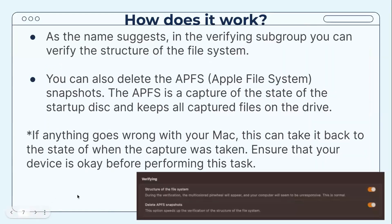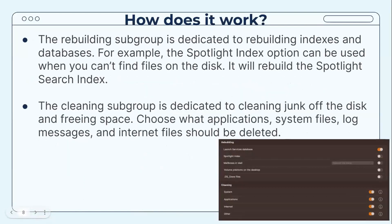In the Verifying subgroup, you can verify the structure of the file system. You can also delete APFS (Apple File System) snapshots — the APFS is a capture of the state of the startup disk, keeping all captured files on the drive. If anything goes wrong with your Mac, it can restore it to the state when the capture was taken, so ensure your device is okay before performing this task.